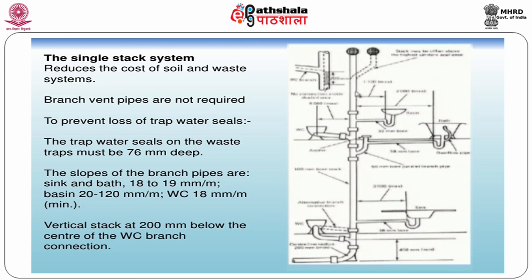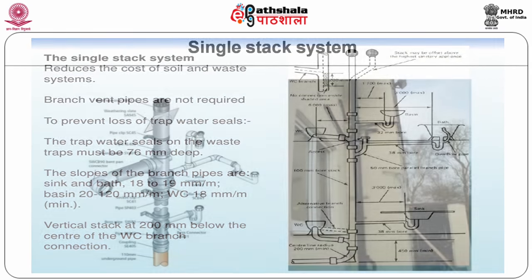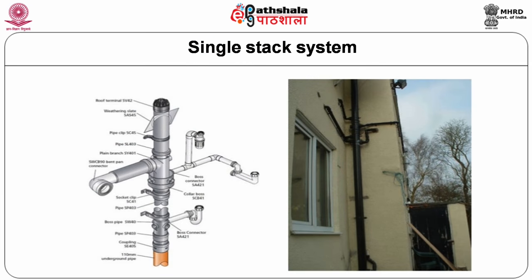The single stack system is the most economical. The trap water seals must be at least 75 mm. The slope of branch pipes must be at least 18–19 mm per meter length, basins 20–120 mm per meter length, and water closet 18 mm per meter. The vertical stack may be a minimum of 200 mm below the center of the water closet branch.